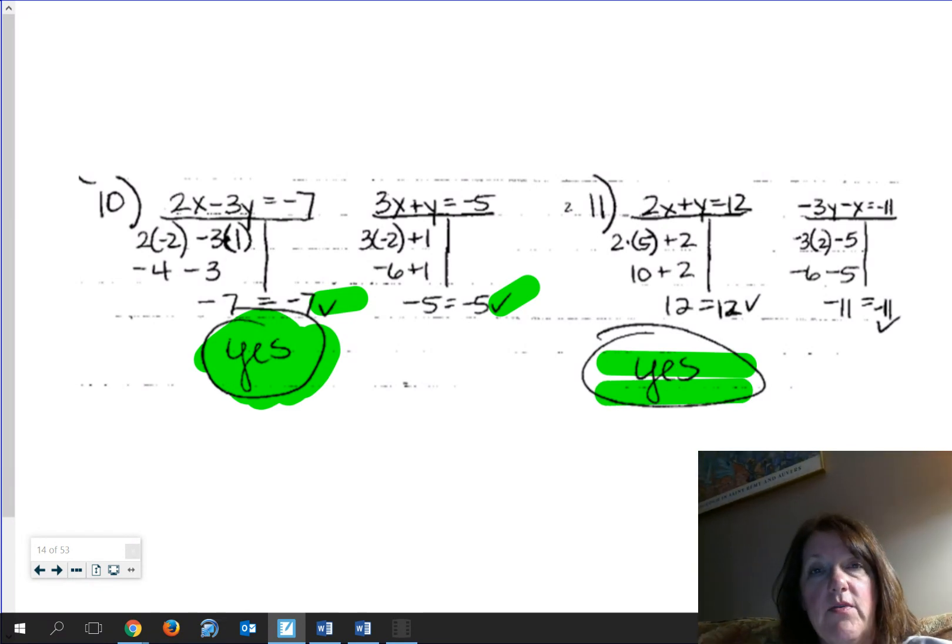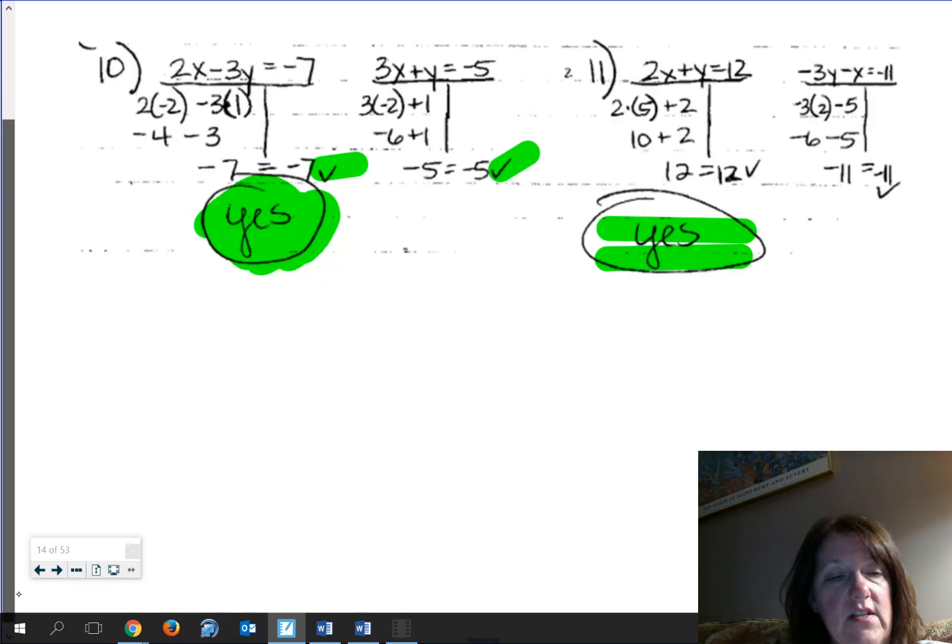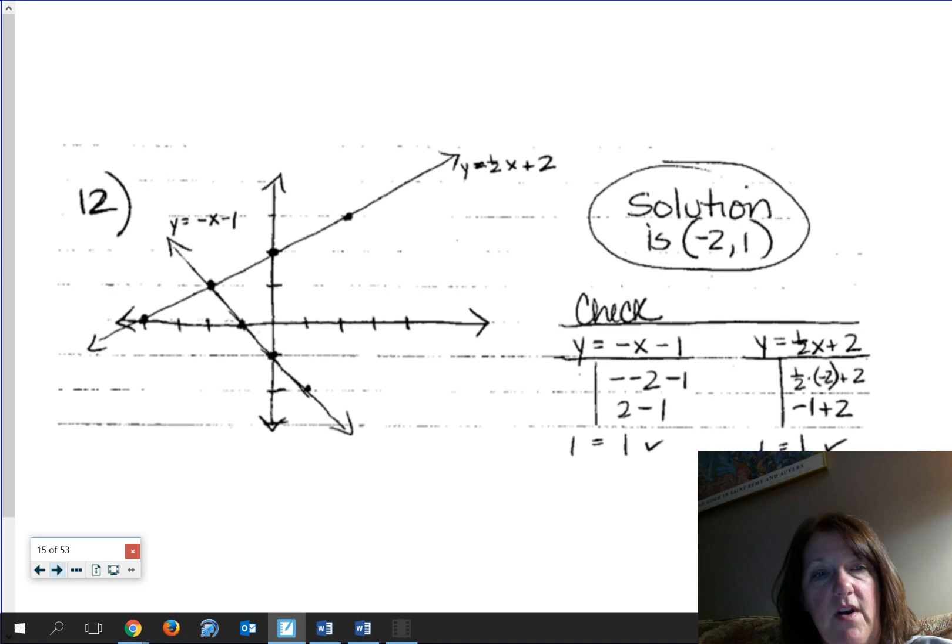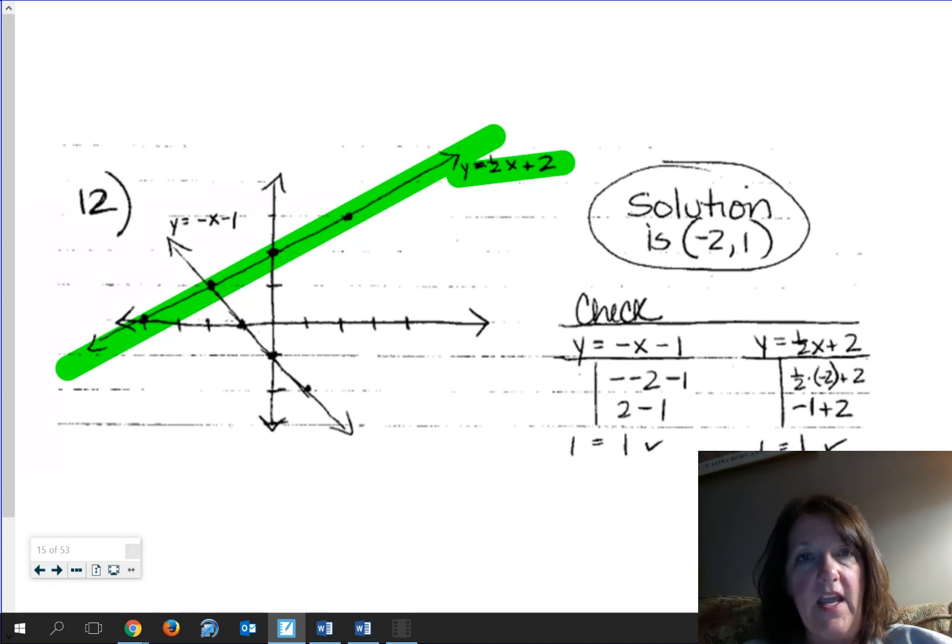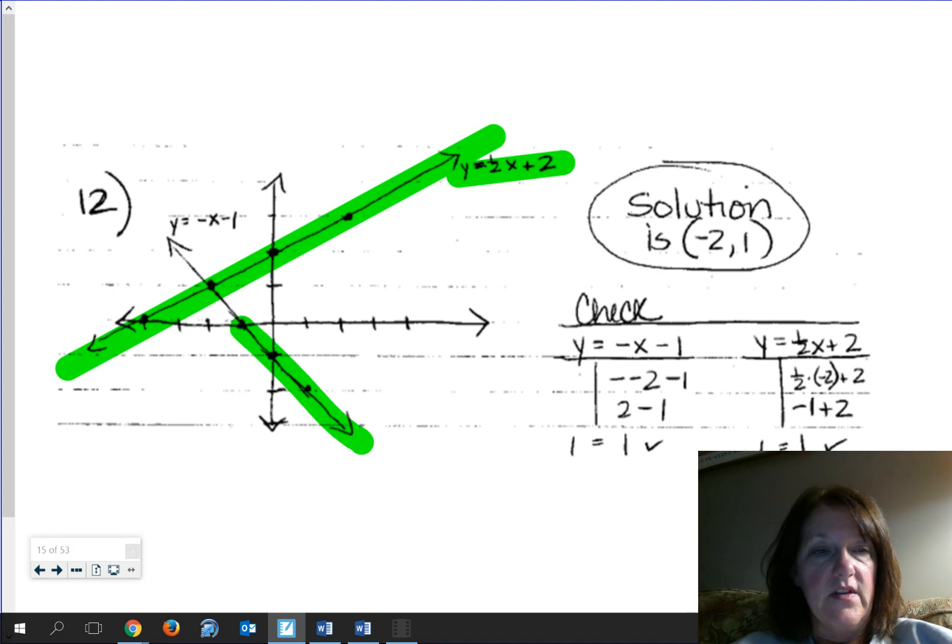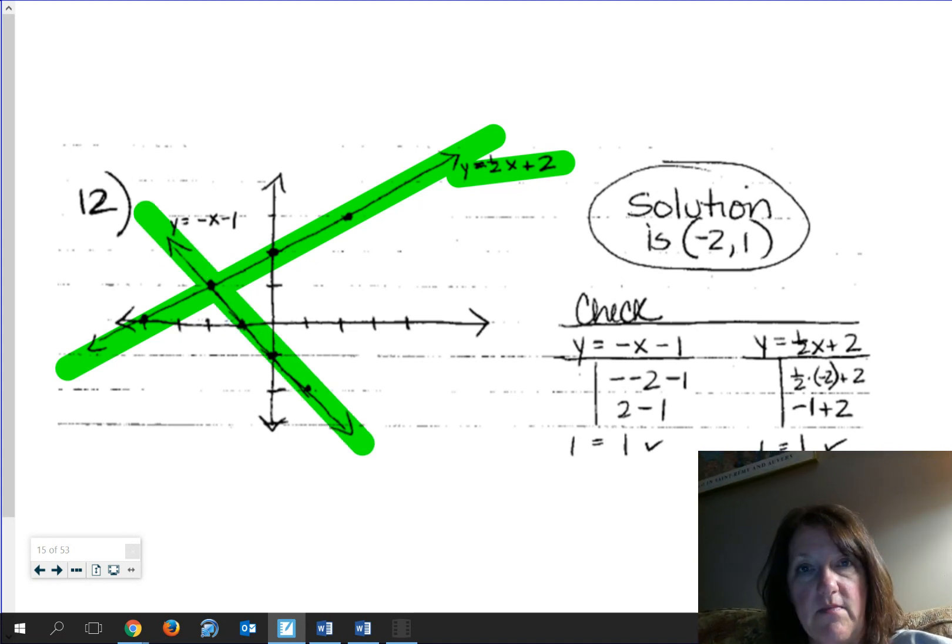Now starting with number 12, you have to do some graphing, find where these two cross each other or where that point of intersection is. So here's number 12. You should have two lines graphed, so take a look at your accuracy here. Here's this line, y = 1/2x + 2. Here's the other one, which is y = -1x - 1. Now that you've got those two, you find the point of intersection where they cross.